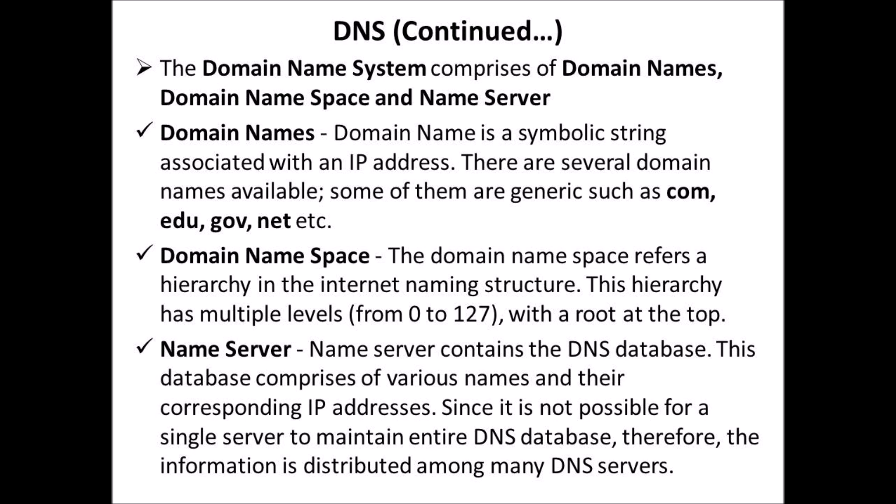The Domain Name System comprises three components: domain names, domain name space, and a name server. A domain name is a symbolic string associated with an IP address. There are several domain names available; some of them are generic, such as .com, .edu, .gov, .net, etc. The domain name space refers to a hierarchy in the internet naming structure, with multiple levels from 0 to 127, with a root at the top. A name server contains the DNS database, which comprises various names and their corresponding IP addresses.